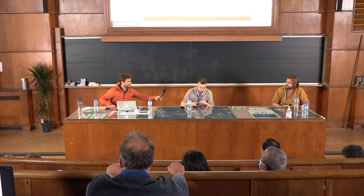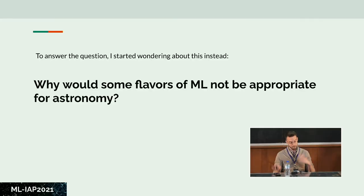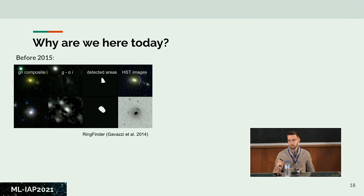Thank you very much, Mark. Now we'll hear from François. So I thought I'd start by thinking about the question we were asked: where can you apply machine learning? The opposite question — where would you not apply machine learning — is actually maybe more interesting. I went back to why we're all here today: we talk about machine learning, but the real reason is because of deep learning, and something really special happened around 2015. I'm taking the example of strong lens finding because I think it's a perfect example of what exactly happened.